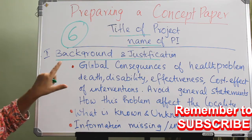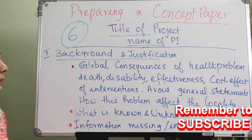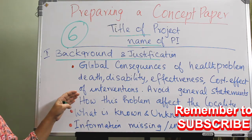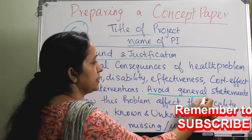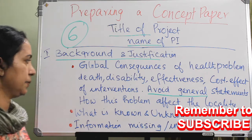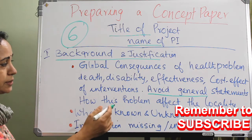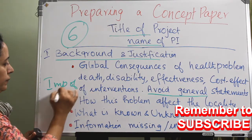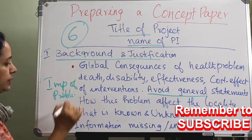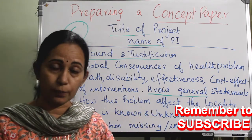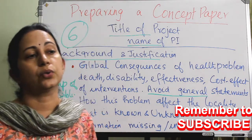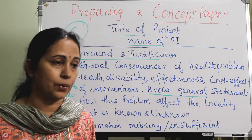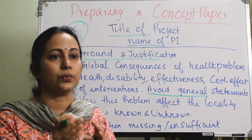For importance, you can write about global consequences of the health problem — death, disability, cost-effectiveness of interventions — and always avoid general statements. Be very specific and describe how this problem affects the locality. The second bullet covers what is known and unknown in relation to literature review and the local context. The third is the information missing or insufficient to address the problem more effectively, which is what you are going to study.